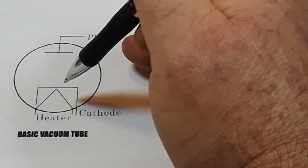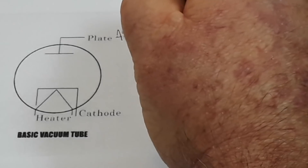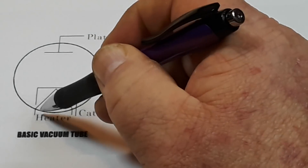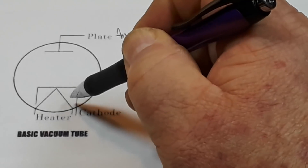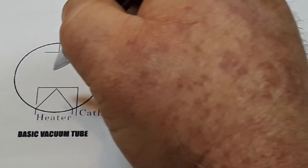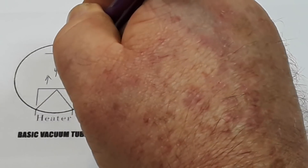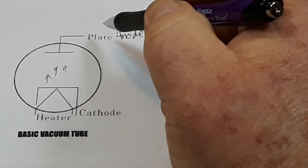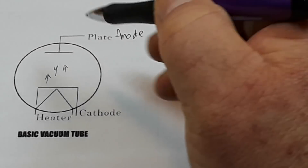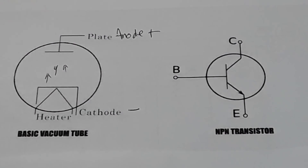So the most basic vacuum tube originally invented in 1904 looked just like this. We have the tube with no air in it. It has a plate at one side — you could also call it the anode — and a cathode at the other side with the heater. As the heater heats up the cathode, electrons start firing off of it and they go to the plate, the anode, because electrons go from negative to positive.